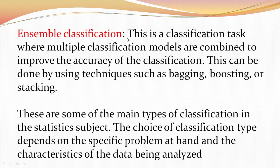Ensemble classification is a classification task where multiple classification models are combined to improve the accuracy of the classification. This can be done using techniques such as bagging, boosting, or stacking. These are some of the main types of classification in statistics, and the choice depends on the specific problem and the characteristics of the data being analyzed.